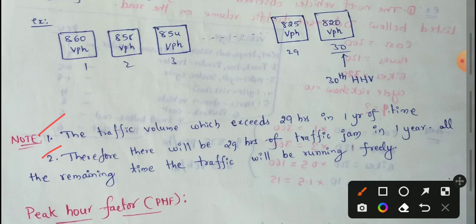Therefore, there will be 29 hours of traffic jam in one year. Remaining all time, the traffic will be running free.